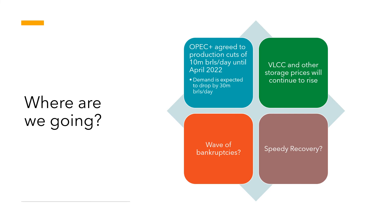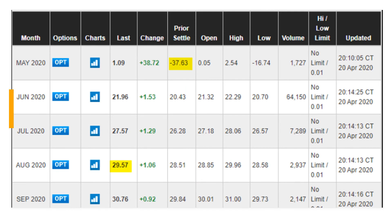Fourth is the question of recovery shape. Some economists think we'll have a V-shaped or U-shaped recovery. I think we're going to have a bathtub recovery — basically walking through the valley of death for quite a while, probably at least the next few quarters. That's outside the scope of this video, but these are all things we need to think about.